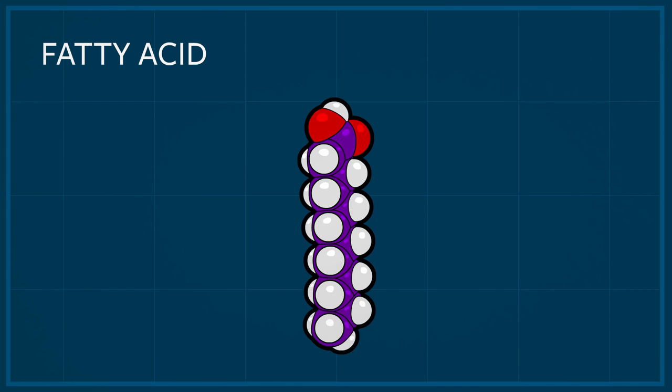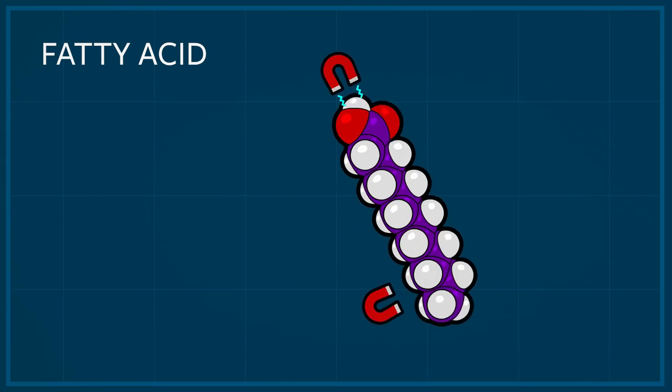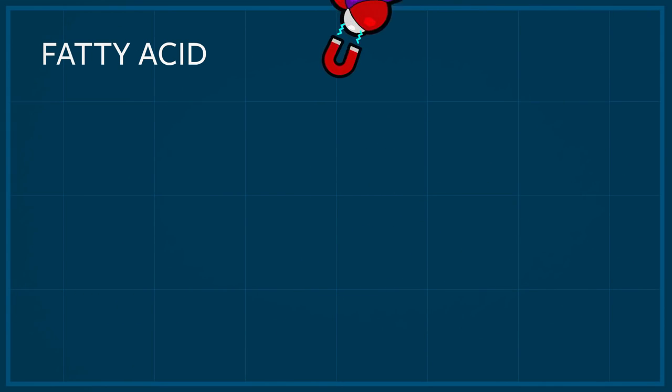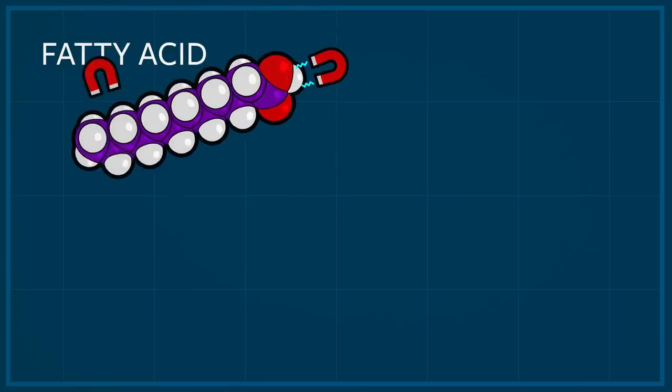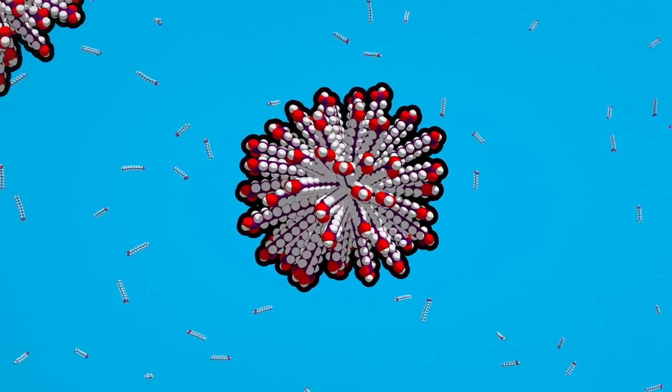This happens because water molecules are attracted to the oxygen heads of fatty acids, sort of like a magnet, but water repels their oily carbon tails. When fatty acids pass near each other, their tails are pushed together by water, eventually forming a ball.